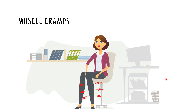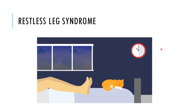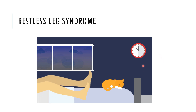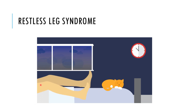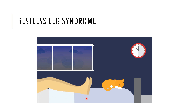Another case of muscle impairment is restless leg syndrome. It is an unpleasant feeling in the legs where you have the urge to move both legs. It is worst at rest, especially at night. It is more likely associated with anemia, kidney failure, diabetes, and even during pregnancy. The leg is restless when trying to lie down, and there is an unpleasant feeling to keep moving the legs up and down continuously.